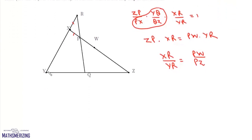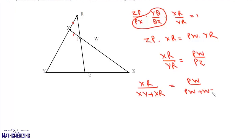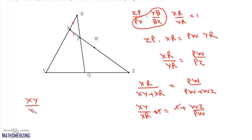Since YR equals XY plus XR, we write XR upon (XY plus XR) equals PW upon (PW plus WZ). Taking reciprocals: XY upon XR plus 1 equals 1 plus WZ upon PW. The 1's cancel, giving XY upon XR equals WZ upon PW.